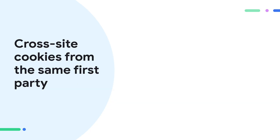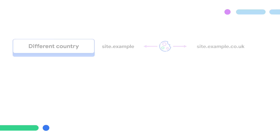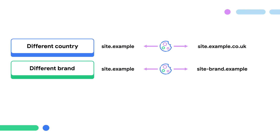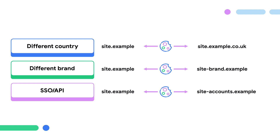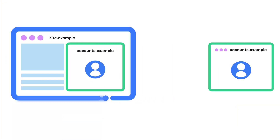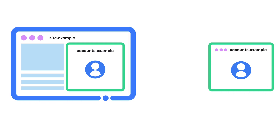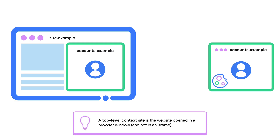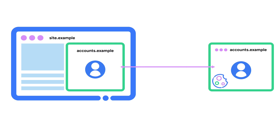What about third-party cookies? The name may be a bit misleading. You'd think it is always another third-party company setting those, and that you have no control over them. But think of them as cross-site cookies. Imagine you own Site.example and Accounts.example. If Accounts.example is embedded on Site.example and uses cookies set in the top-level context of Accounts.example, those cookies are still third-party, even though they are set and accessed by the same company.